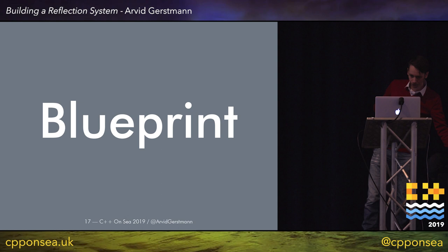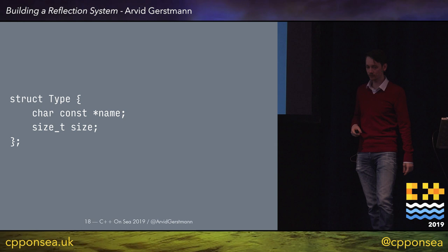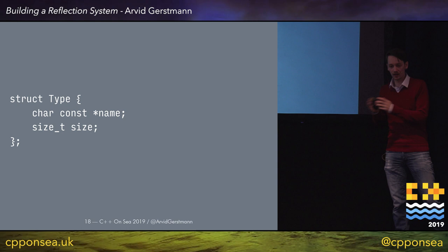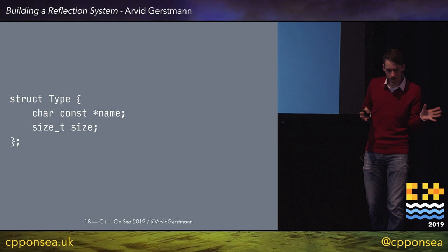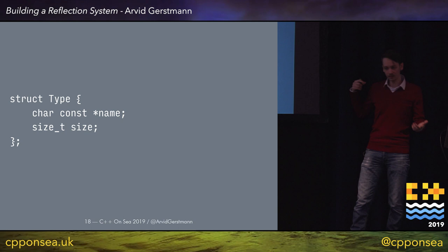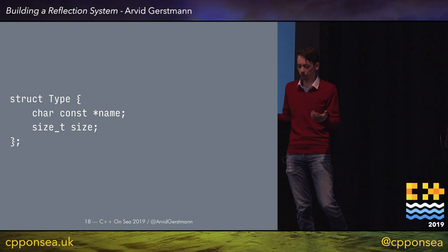Here we have a struct called Type. It has basic information about every type in our program. A type only really has two distinct properties which make it distinguishable: its name and its size. Int and float are fundamentally different in behavior but are distinguished by name and size. For example, to construct reflection information for int, we have name "int" and size sizeof(int), which is generally four.